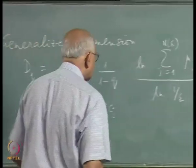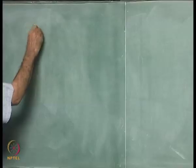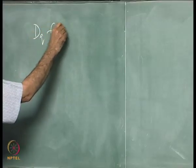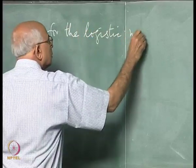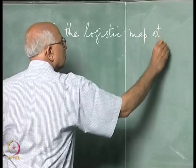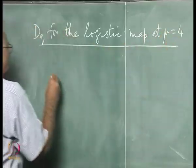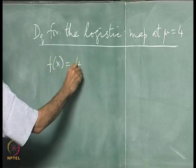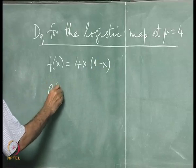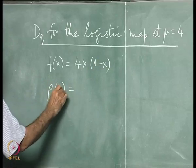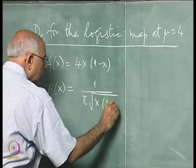The next task is to compute D_q for the logistic map at fully developed chaos. The map function is f(x) = 4x(1−x) at λ=4, and the normalized invariant density in this case is ρ(x) = 1/(π√(x(1−x))).